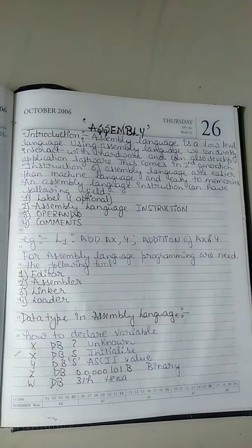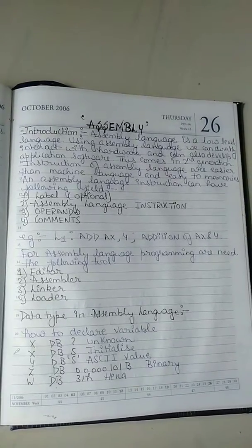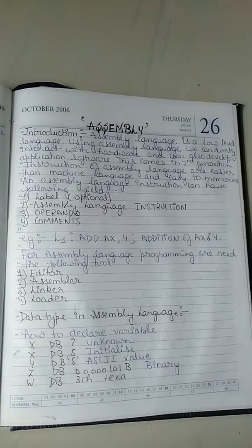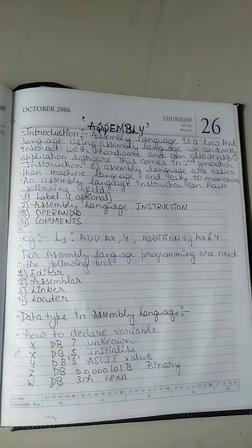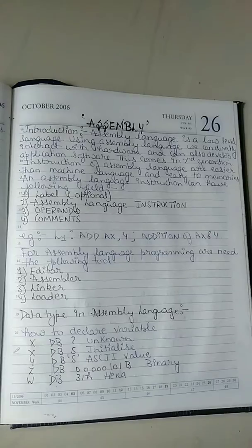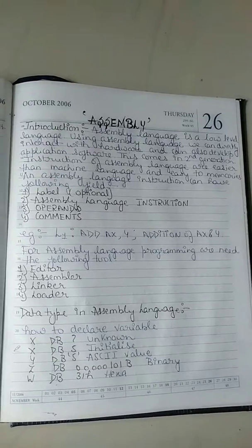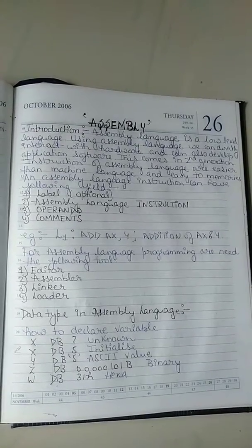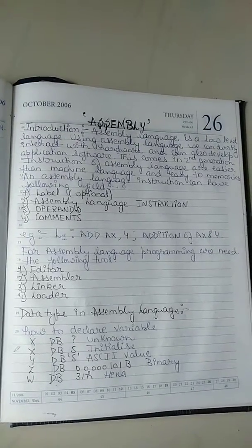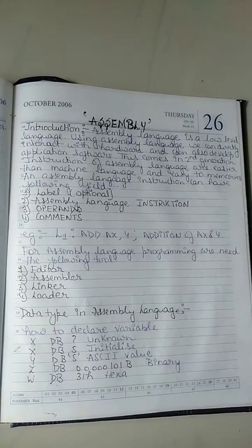For assembly language programming, we need the following tools. Number one is editor, assembler, linker and loader.